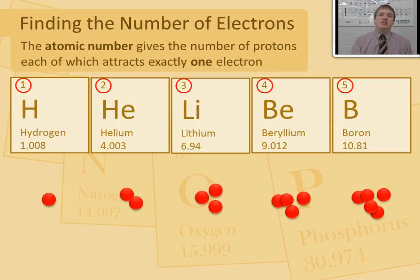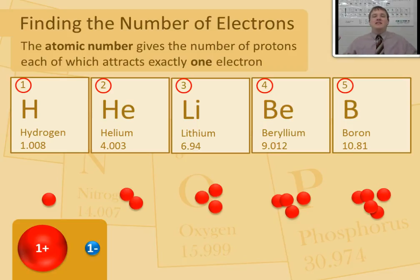But also remember that relationship I just mentioned. Each proton has a 1 plus charge, each electron has a 1 minus charge, and to balance each other out, each proton is going to attract exactly one electron. That's what we're going to find for each of these elements.